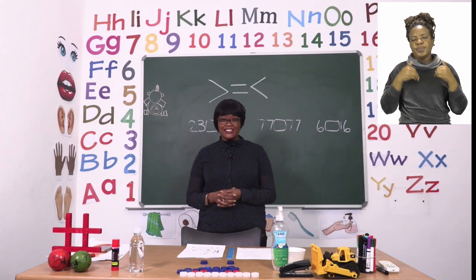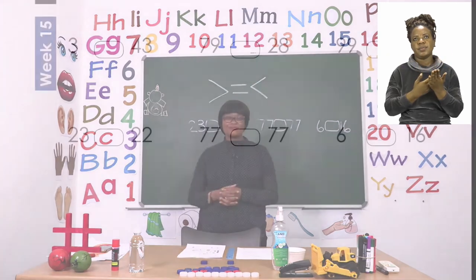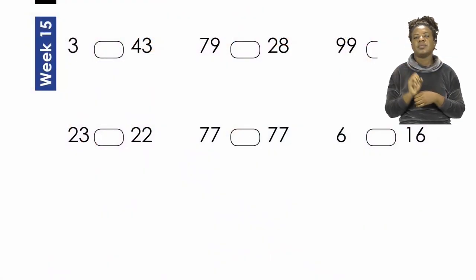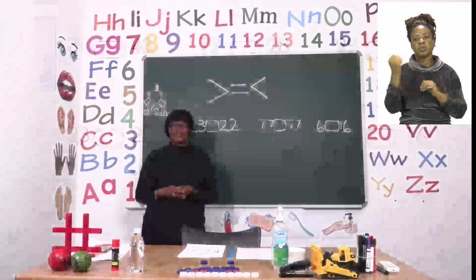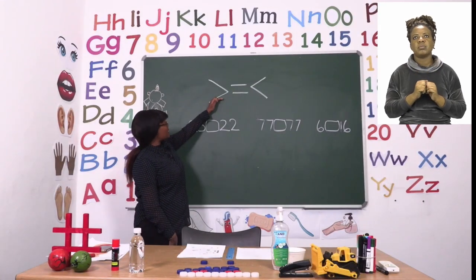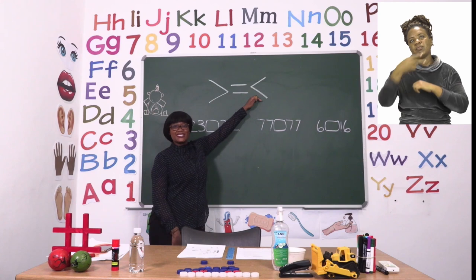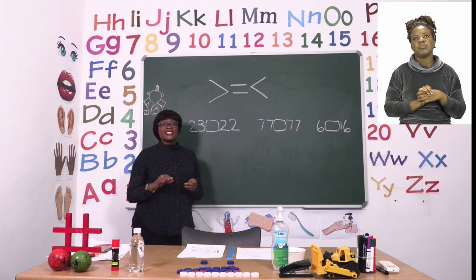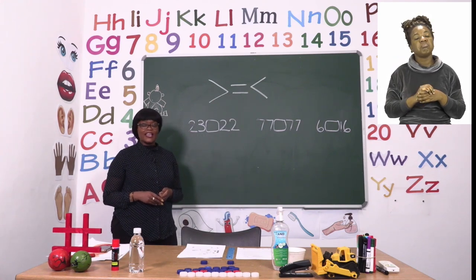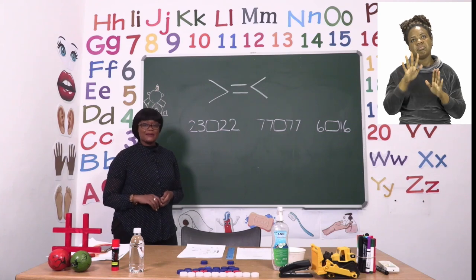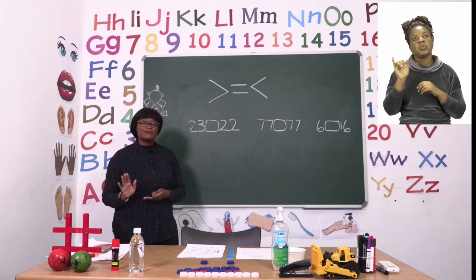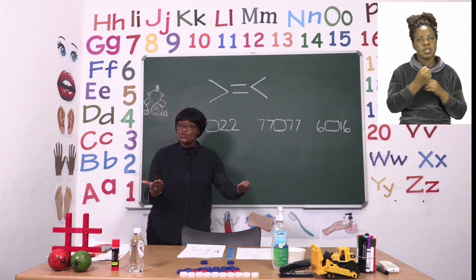To start our lesson today, boys and girls, we are going to go to page 6. On page 6 we are going to be comparing numbers. Now it is our job to write the symbol that makes the problem true. So let's take a look at the board. The symbols that we are going to use today are greater than, equal to, or smaller than. Today we are going to use them as symbols to show which number is bigger by comparing two numbers.